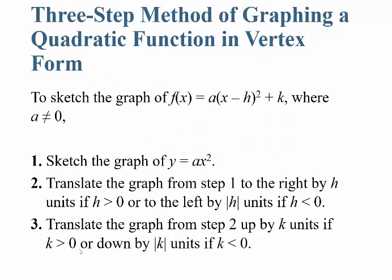If you want to sketch a graph of f of x equals a times (x minus h) squared plus k, where a is not equal to 0, here's what you do. First, ignore h and k and sketch the graph of y equals a times x squared. Next, translate the graph to the right h units if h is greater than 0, or to the left by the absolute value of h units if h is less than 0.